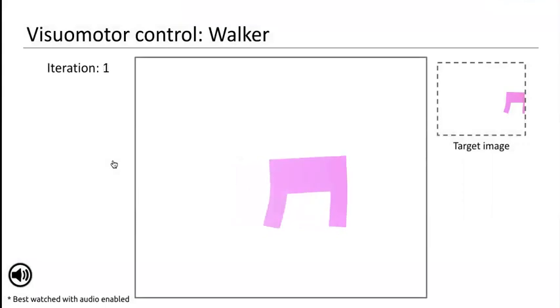In just about three iterations, though, the walker is successfully able to reach the target position.